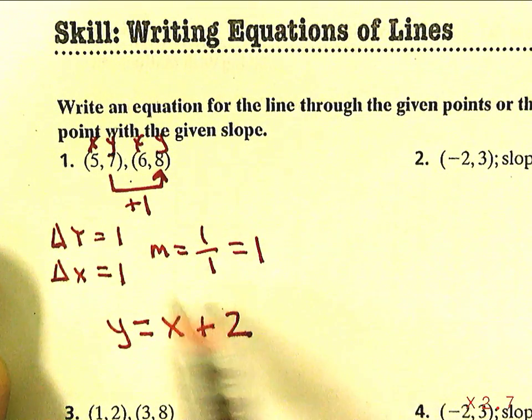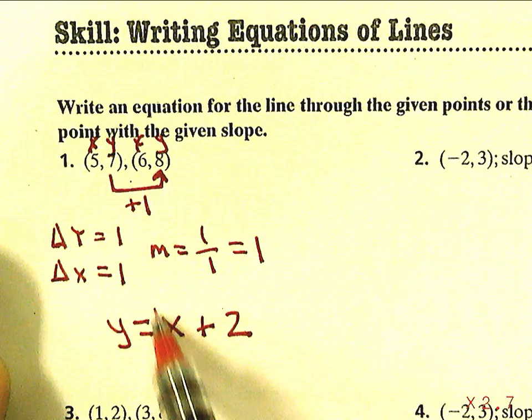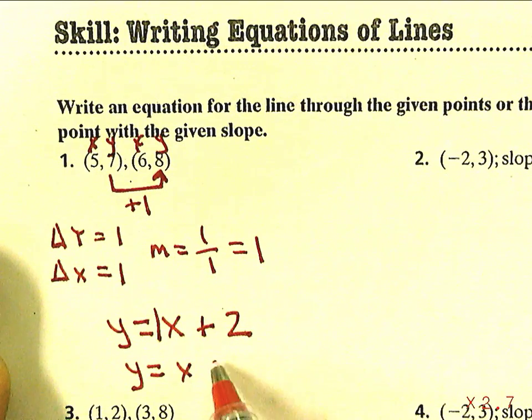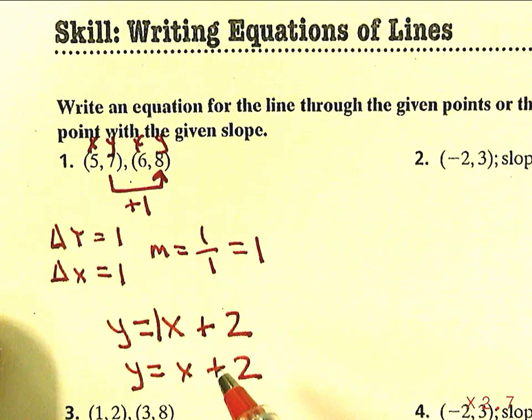Once I find the slope, once I know that it's 1 times X (which there's really no need to write the 1, it's the same thing), these two equations y = x + 2 or y = 1x + 2 would both satisfy this particular problem.